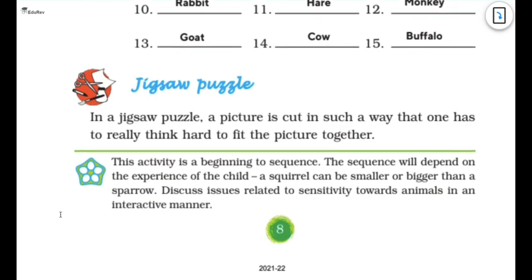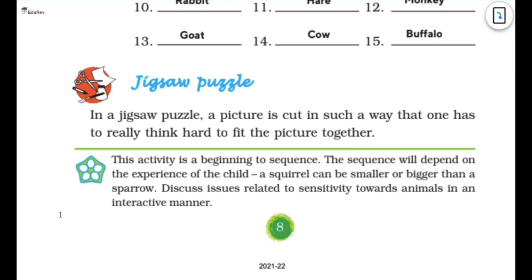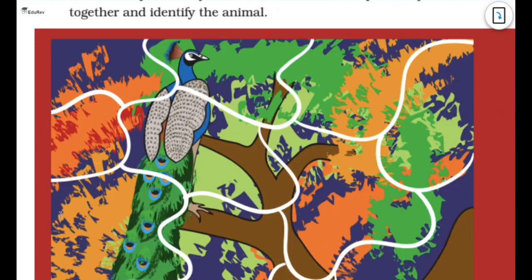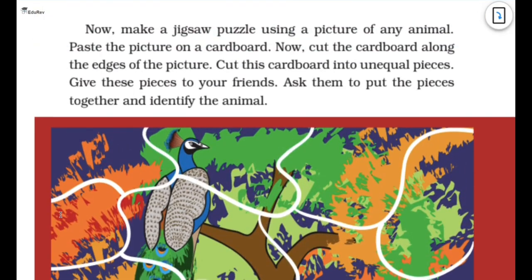And the last is the jigsaw puzzle. In a jigsaw puzzle a picture is cut in such a way that one has to really think hard to fit the pictures together. I hope you people have seen jigsaw puzzle and you have tried jigsaw puzzles at your place. So now you have to make your own jigsaw puzzle. What you need to do is you need to take a paper, you have to draw painting of an animal and then you have to paste that painting on a cardboard. And after pasting that on the cardboard you have to cut the random pieces and make a puzzle. And then you have to give it to your friend and see that whether he or she is able to do it or not.